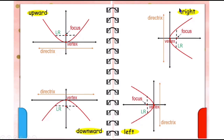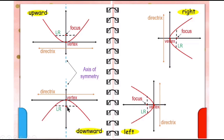So these are the four cases of parabola: upward, downward, right, or left. If the parabola opens upward or downward and the vertex is at the origin, the axis of symmetry is along the y-axis. But if the parabola opens right or left, the axis of symmetry is along the x-axis. This is the latus rectum of the parabola opening upward or downward — the direction is horizontal.